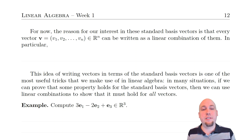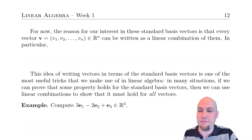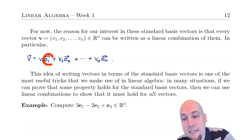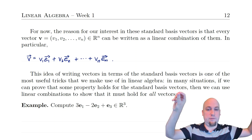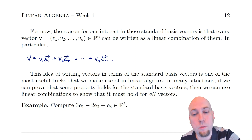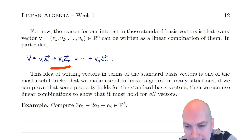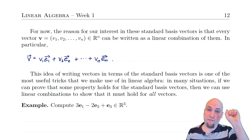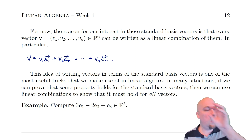Every single vector in n-dimensional space can be written as a linear combination of the standard basis vectors. If you have a vector v with entries v1 through vn, you build it from the standard basis vectors by using those entries as coefficients: v1 times e1, plus v2 times e2, and so on. Since e1 has a one in the first entry, v1·e1 puts v1 in the first entry and zeros elsewhere; v2·e2 puts v2 in the second entry, and so on. Adding them all up builds the vector one entry at a time.